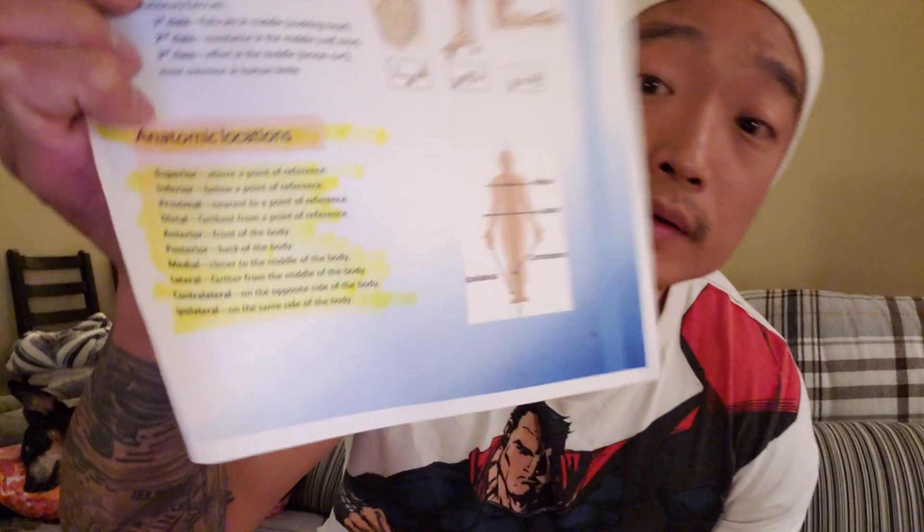EPOC — excess post-exercise oxygen consumption — had a couple of questions on the exam, so know what that is. Moving on to page six, fundamentals of biomechanics covers force and torque — not as heavily tested, but go over it and become familiar with it as much as possible. Also on this page are anatomic locations and terms like superior, inferior, anterior, and posterior.